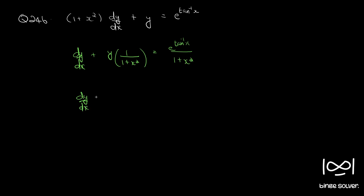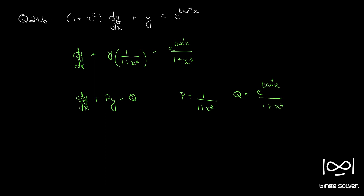The standard form is dy/dx + Py = Q, where P and Q are functions of x alone. So this is a linear differential equation. Here P = 1/(1 + x²) and Q = e^(tan⁻¹x) / (1 + x²).